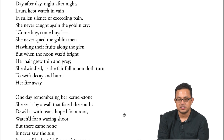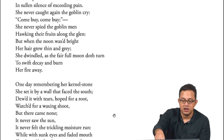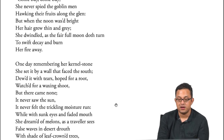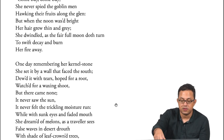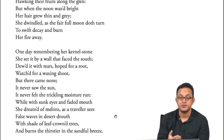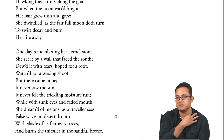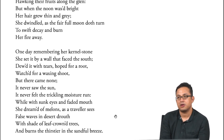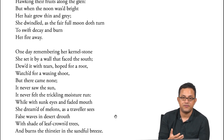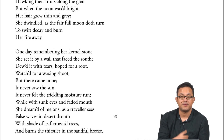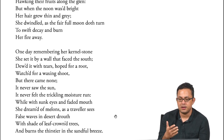'One day, remembering her kernel stone, she set it by a wilder face south, dewed it with tears, hoped for a root, watched for a waxing shoot, but there came none. It never saw the sun, it never felt the trickling moisture run, while with sunk eyes and faded mouth she dreamed of melons as the traveller sees false waves in desert drought.' This final image of a mirage in a desert — a false image of hope — is mapped onto the goblin fruit. The goblin fruit is a deceptive optimism giving temporary happiness while taking away one's life blood, not adding substance but driving one toward death.